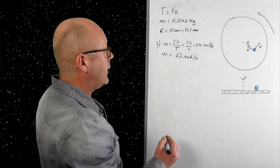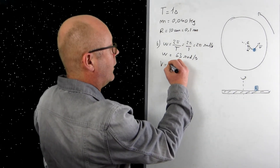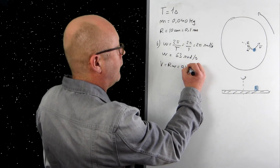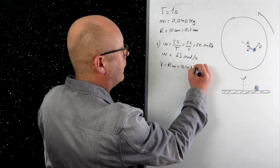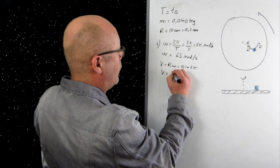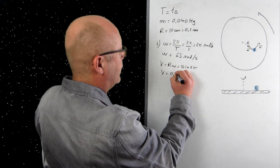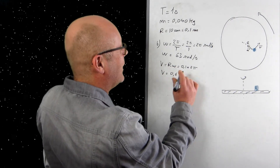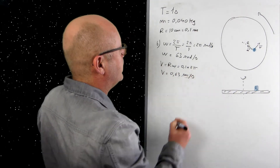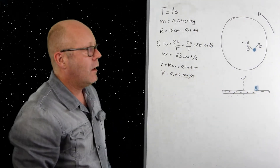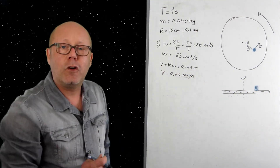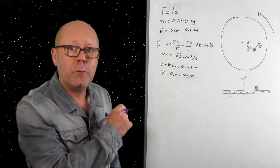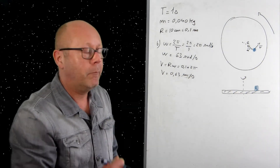The linear velocity is v = rω = 0.1 × 2π ≈ 0.63 m/s. This question is pretty easy — you typically get two marks for it in an exam, so don't miss it.